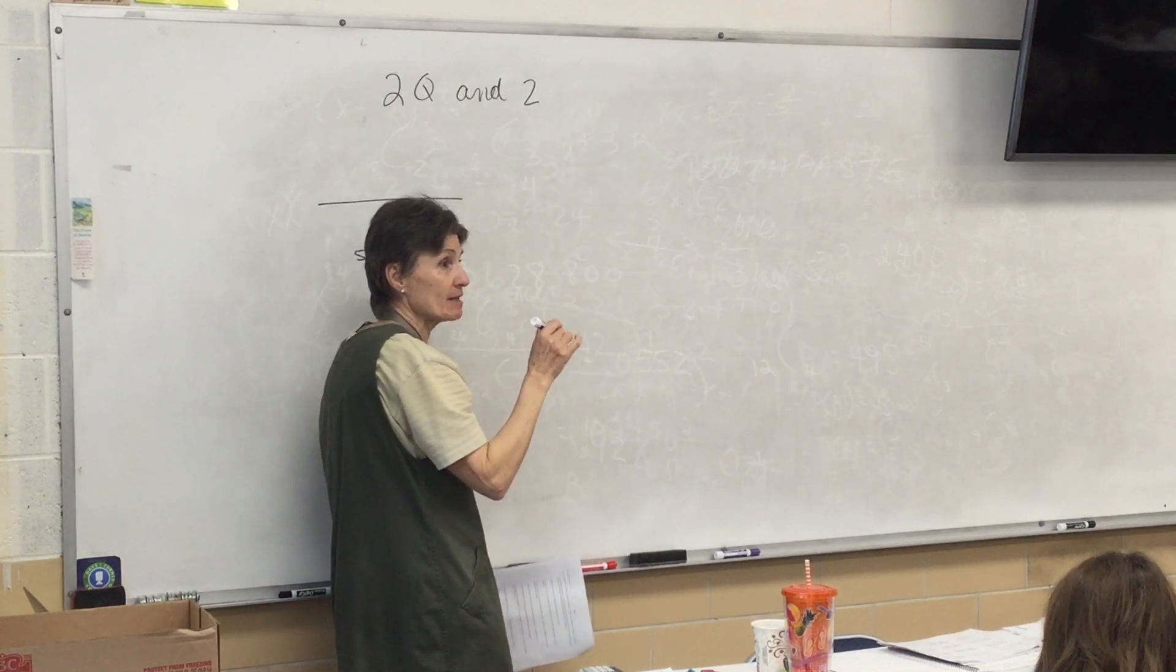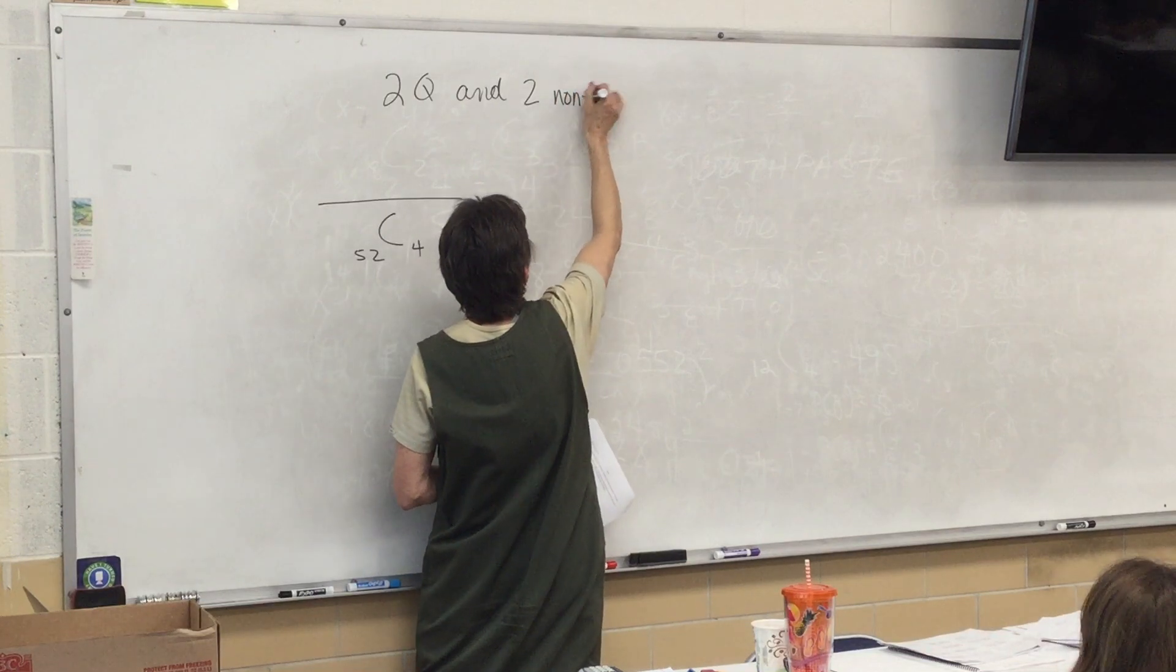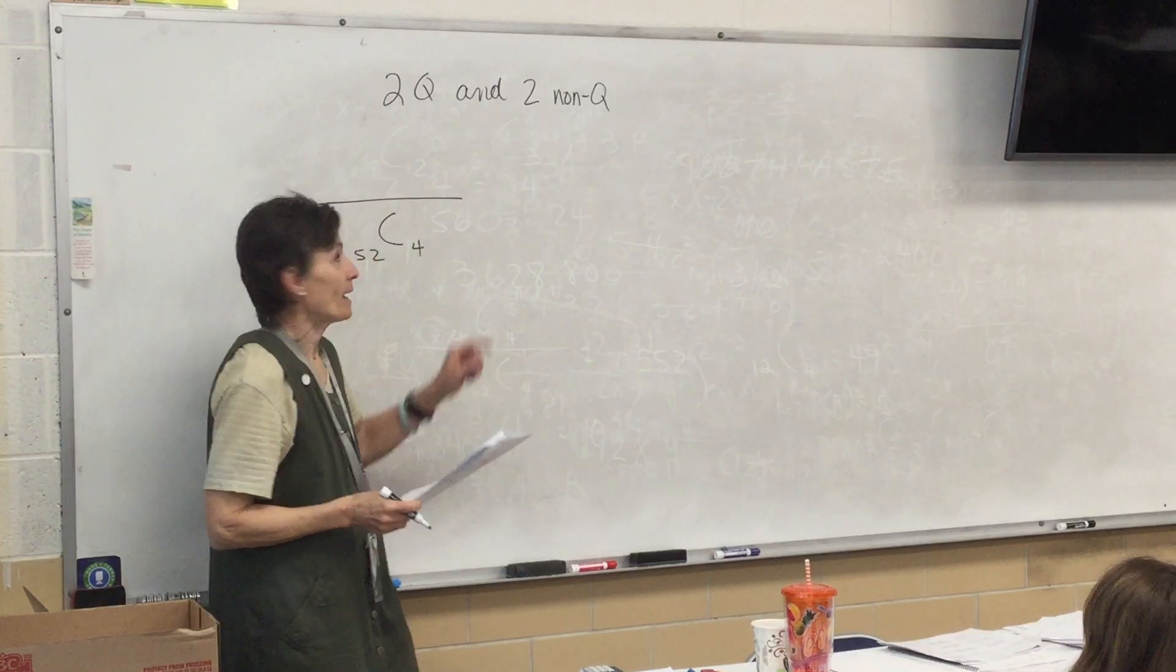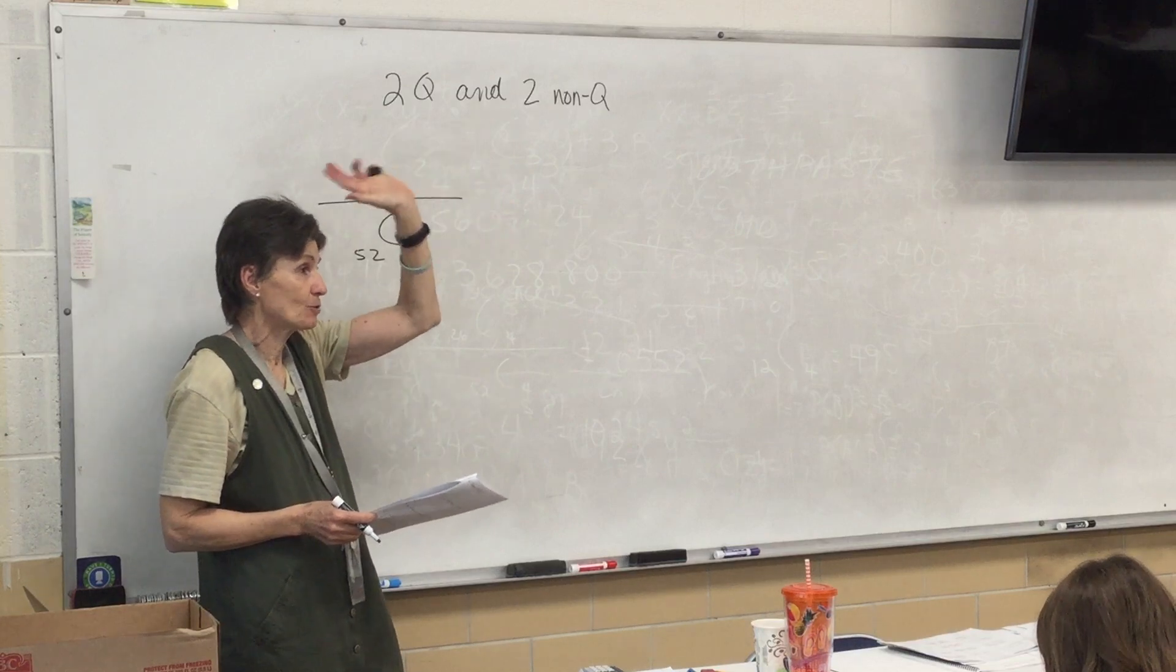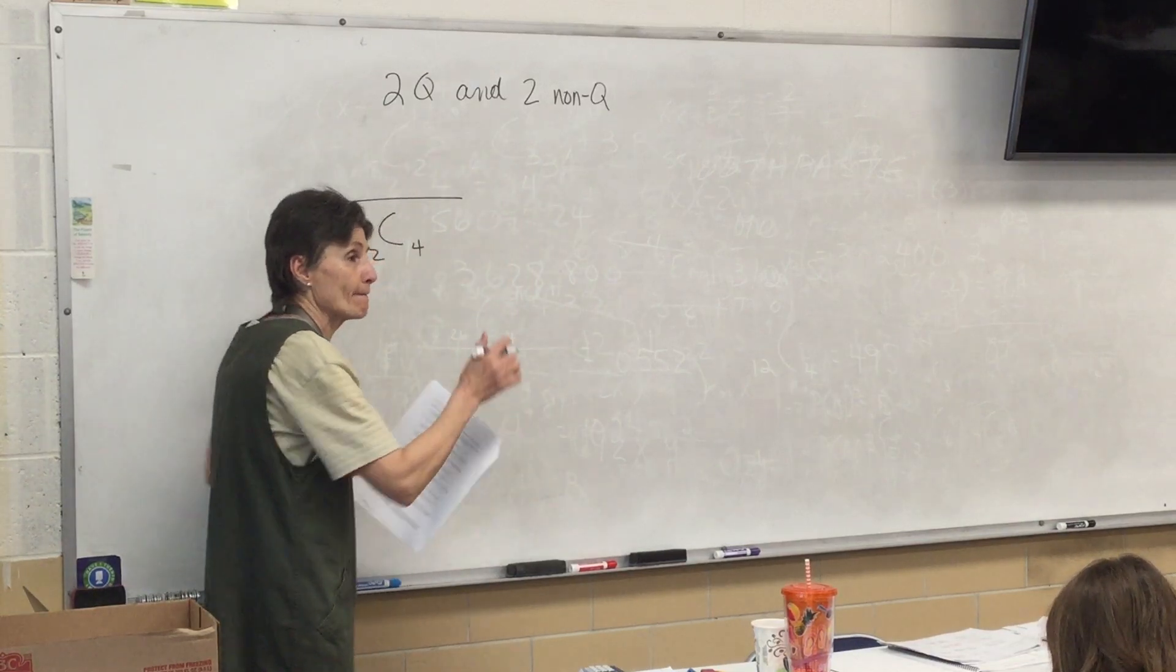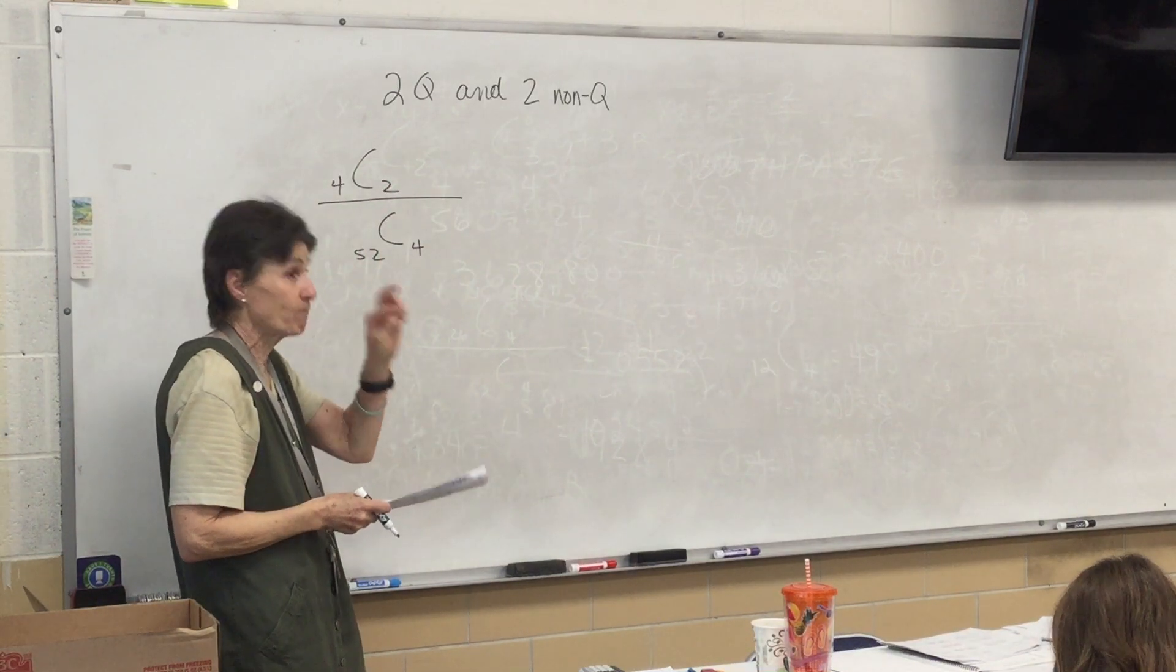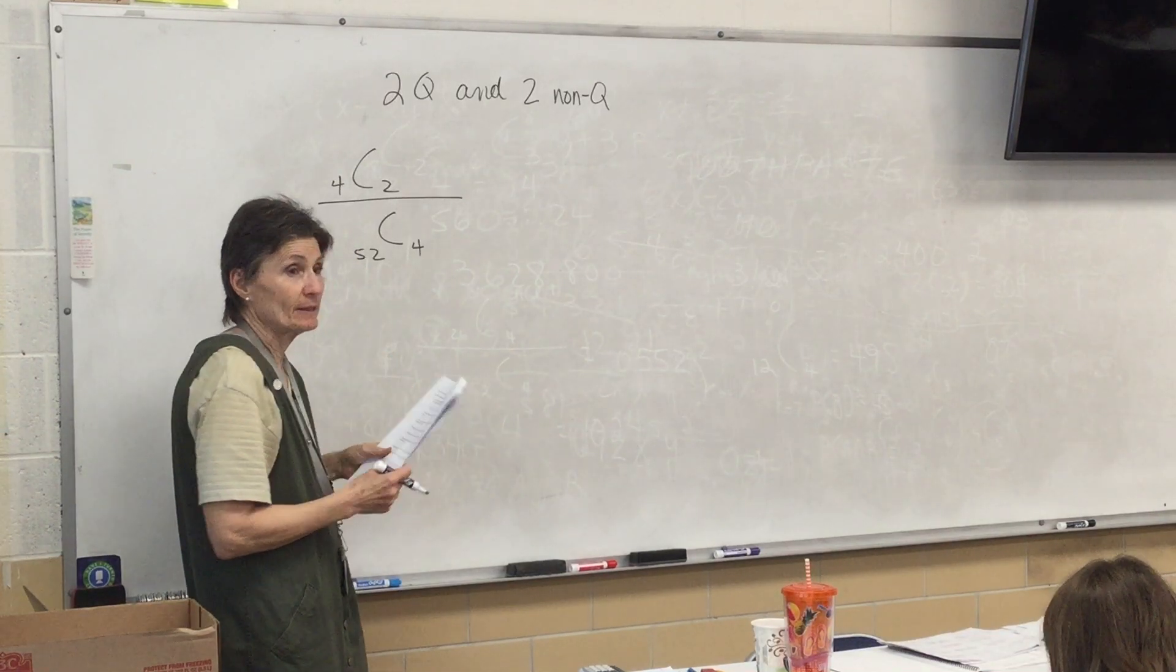Not anything, anything but Queens, right? Because it says exactly 2 Queens. So I don't want to accidentally get another Queen over here. I need 2 Queens and then 2 totally other cards. Alright, what's that look like? 4C2 because there are 4 Queens and I'm picking 2.